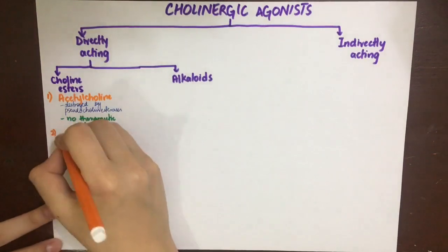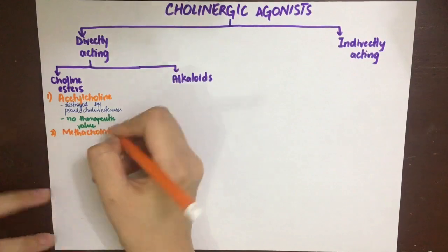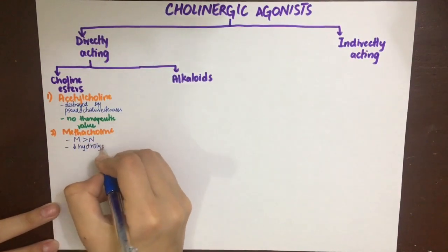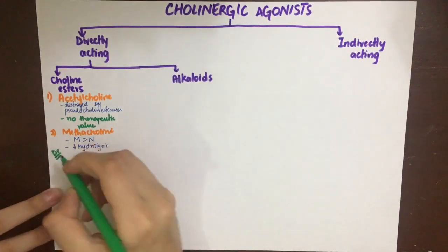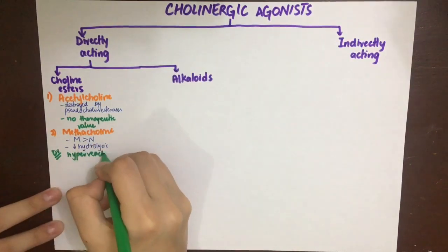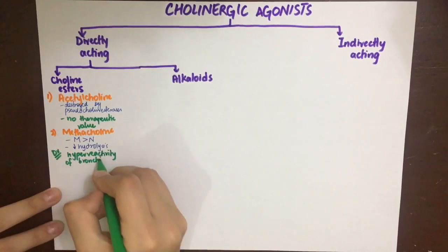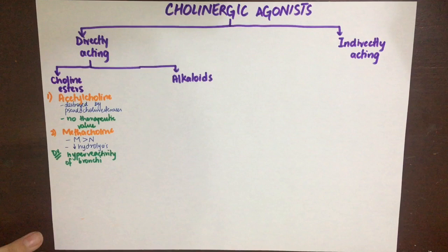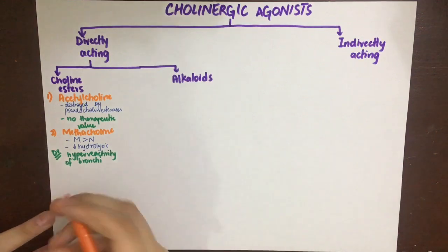The next choline ester is methacholine, and its muscarinic actions predominate over its nicotinic actions. The hydrolysis of methacholine by acetylcholinesterase enzymes is less than that of acetylcholine. Methacholine is a muscarinic agonist, so it will increase bronchial smooth muscle contraction and bronchial gland secretion. Its main use is diagnostic — testing bronchial hyperreactivity in asthmatic patients.